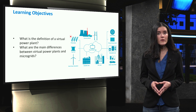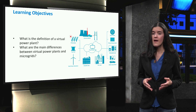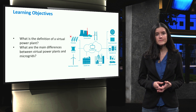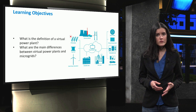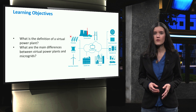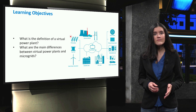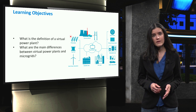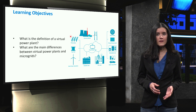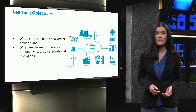In this lesson, we are going to address the definition of a virtual power plant and the main differences that exist with respect to a microgrid. A virtual power plant, or VPP, can be defined as a cluster of distributed energy resources that is collectively operated by a central controller. A VPP can take the place of a conventional power plant while providing more flexibility.